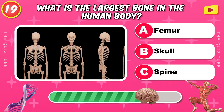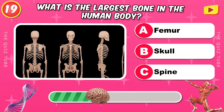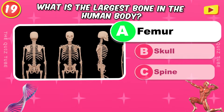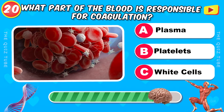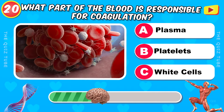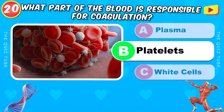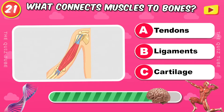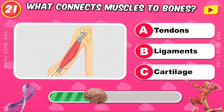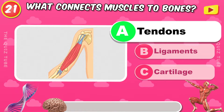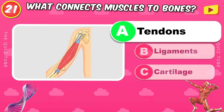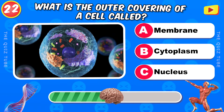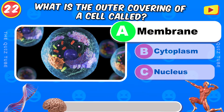What is the largest bone in the human body? The femur. What part of the blood is responsible for coagulation? Platelets. What connects muscles to bones? The tendons. What is the outer covering of a cell called? The membrane.